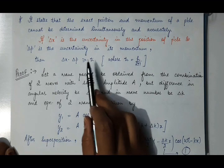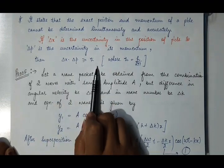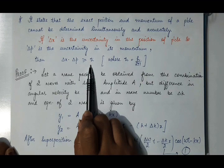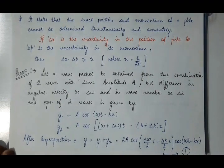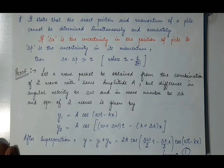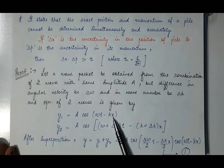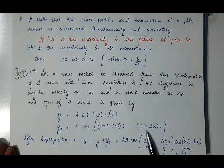So there will always be some value of uncertainty. Now we will prove Heisenberg's uncertainty principle using the concept of de Broglie waves and wave packets. The simplest case is to consider a wave packet as the combination of two waves. Here we consider a wave packet obtained from the combination of two waves having the same amplitude but different angular velocity by delta omega and different wave number by delta k. The equations of displacement of the two waves are: y1 = A·cos(ωt − kx) and y2 = A·cos((ω + Δω)t − (k + Δk)x).